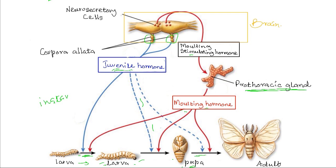As the larva matures, the corpus alata disintegrates, so there is less and less juvenile hormone being produced. This means there is less and less inhibition of the formation of adult tissues, which allows for the formation of adult tissues in the pupa stage after the last molting.